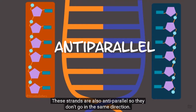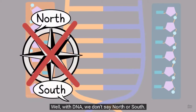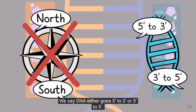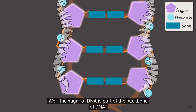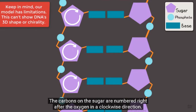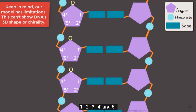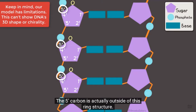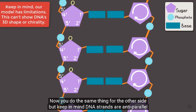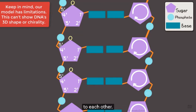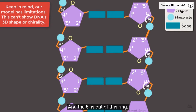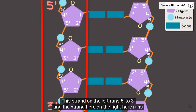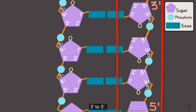The strands are anti-parallel — they don't go in the same direction. With DNA, we say it goes 5' to 3' or 3' to 5'. The sugar of DNA is part of the backbone and has carbons. The carbons on the sugar are numbered clockwise after the oxygen: 1', 2', 3', 4', and 5'. For the other strand, counting the same way, the strand on the left runs 5' to 3' and the strand on the right runs 3' to 5'.